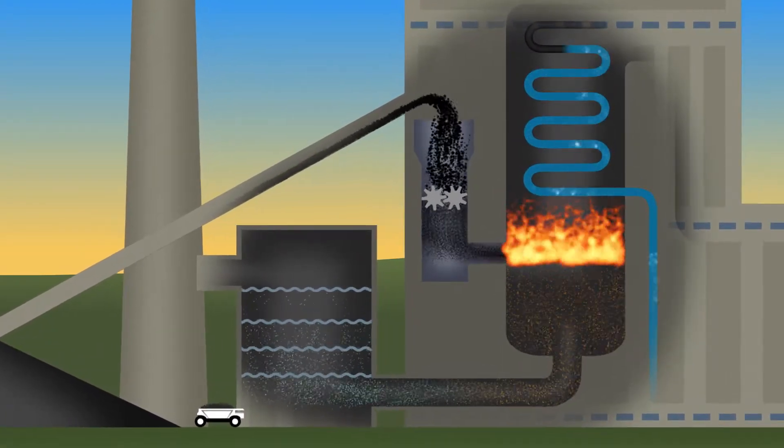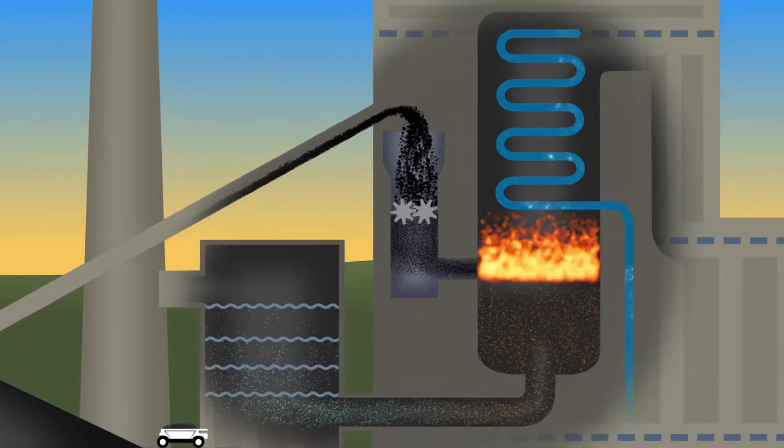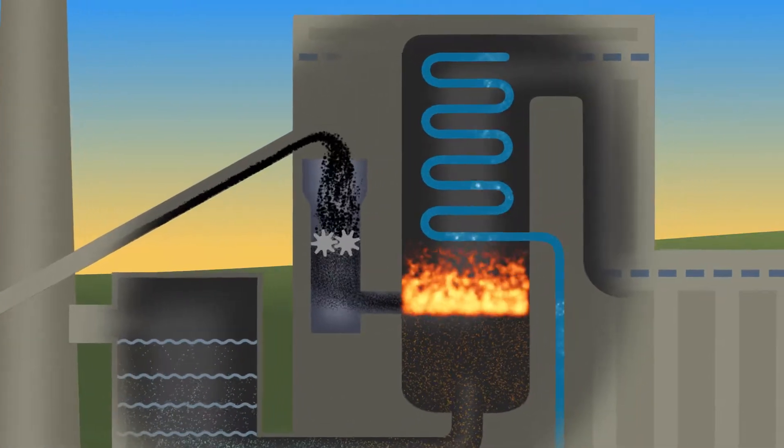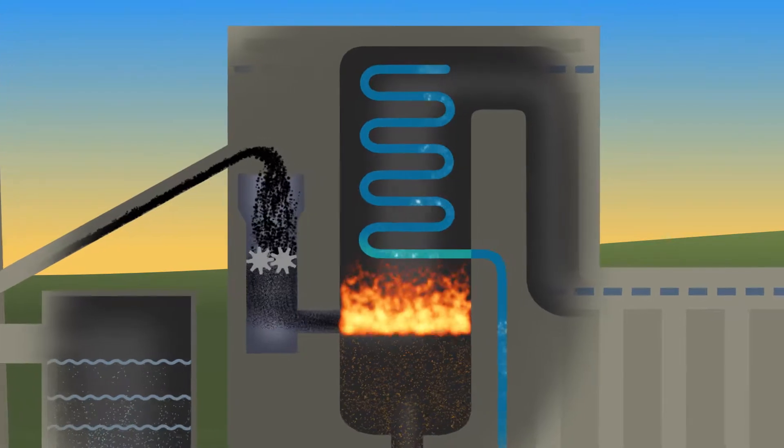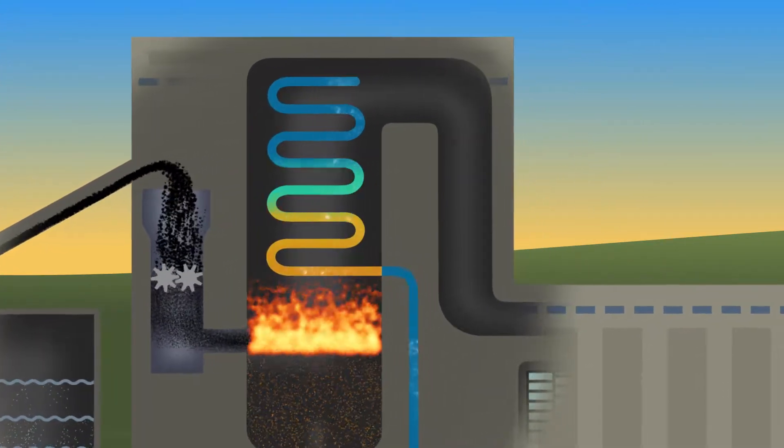Environmental controls, like scrubbers, are used to remove byproducts of combustion and protect the environment. Some byproducts are useful, such as fly ash, which is used in concrete.